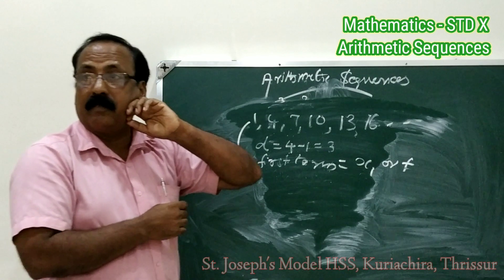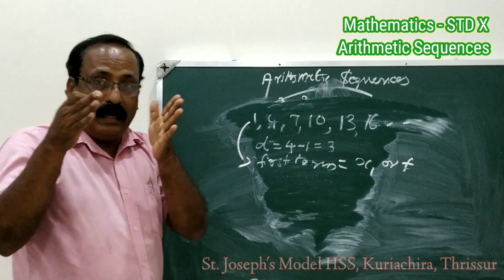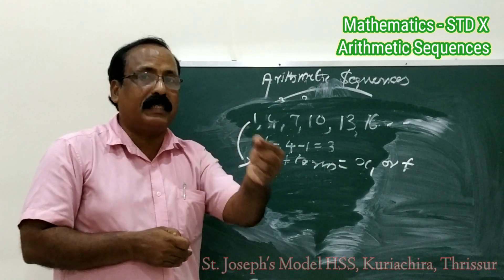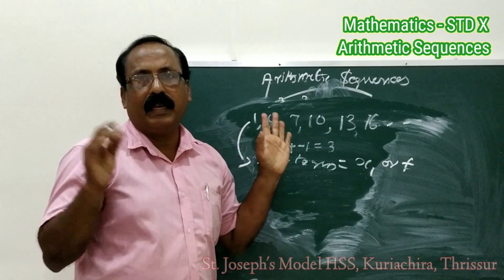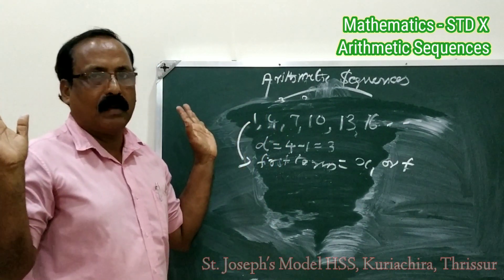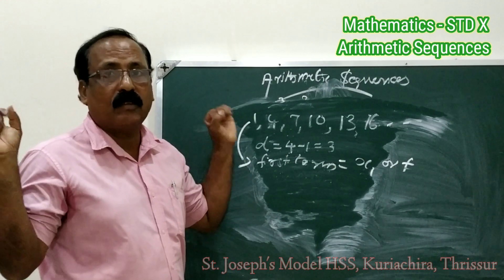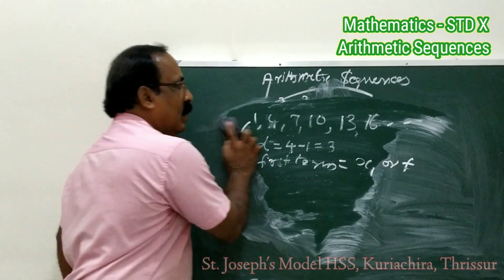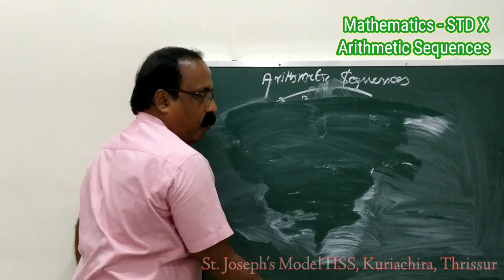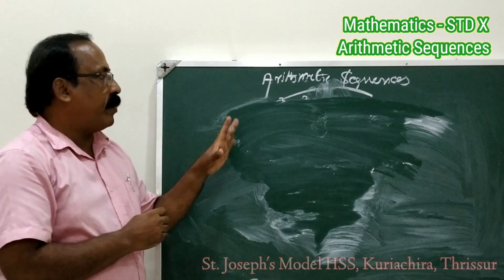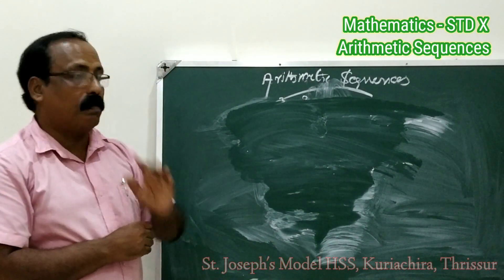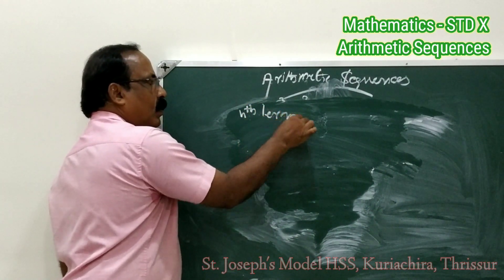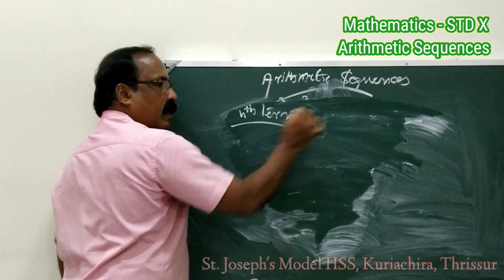That is the basic concept of arithmetic sequence. Now let us define it formally: in a sequence, each term is subtracted from its succeeding or next term and we get a constant number. Such a sequence is known as an arithmetic sequence. Now the second topic is to find out the algebraic form or the nth term of an arithmetic sequence. That is the main important part.